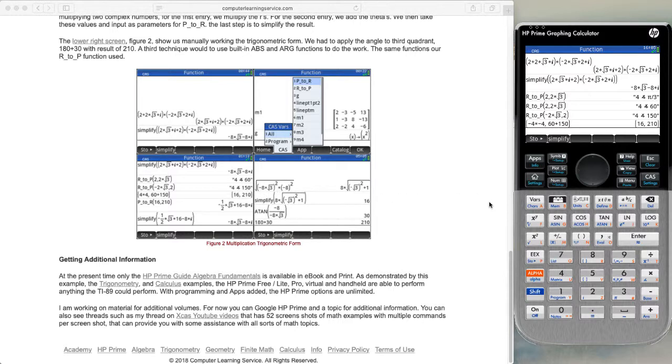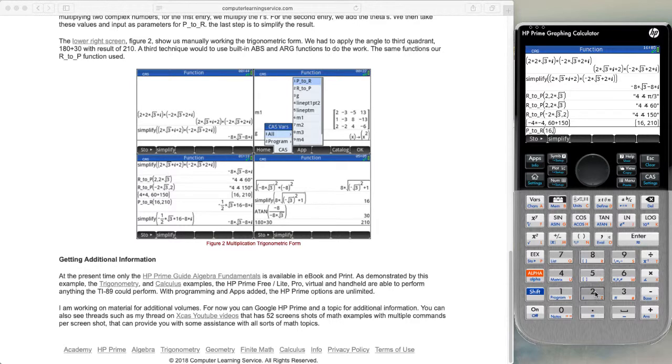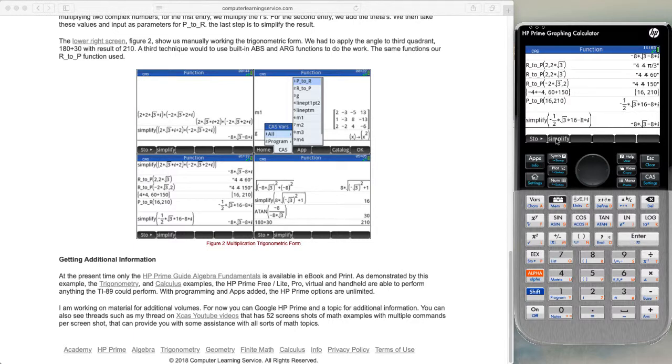The next thing that we do is go to our VAR command, go to our program command, select the first entry, put in our parentheses and use our two values. We manually have to type these in 16 and 210. Press enter and press simplify and we end up with our same answer that we got by multiplying the two directly.